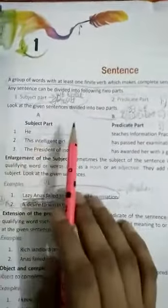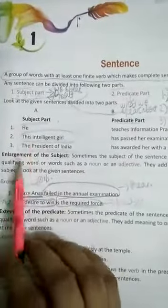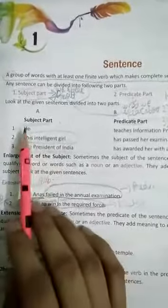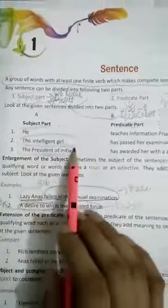So it is not necessary that subject is made from one word. Subject here you can see, there are three words, there are four words. Means it can be one word or even a group of words.